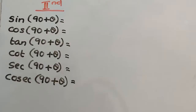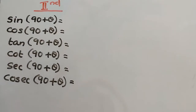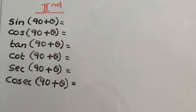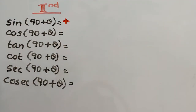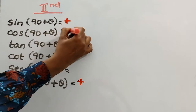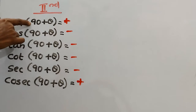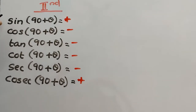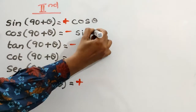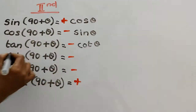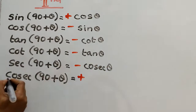Moving to the second quadrant. 90° + θ comes in the second quadrant. We need to find all the trigonometric ratios. In the second quadrant, sine and cosec are positive, so sine will be positive and cosec will also be positive. Remaining answers are negative. 90 is an odd multiple, so we must change the trigonometric function: sine changes to cos, cos changes to sine, tan changes to cot, cot changes to tan, sec changes to cosec, cosec changes to sec.